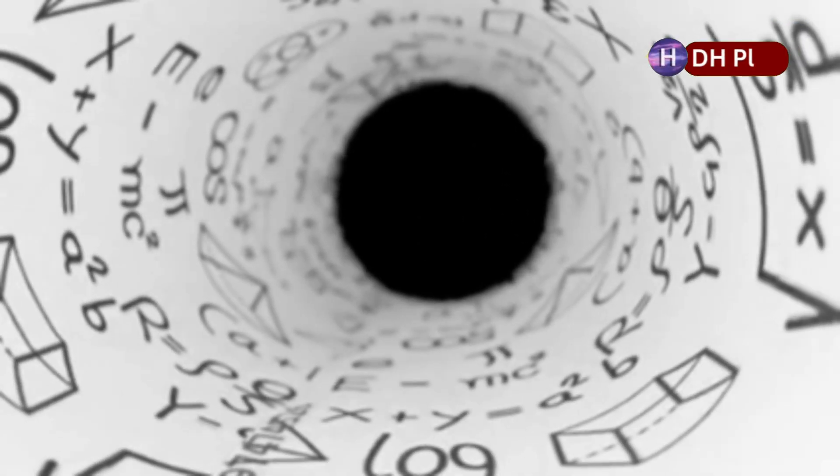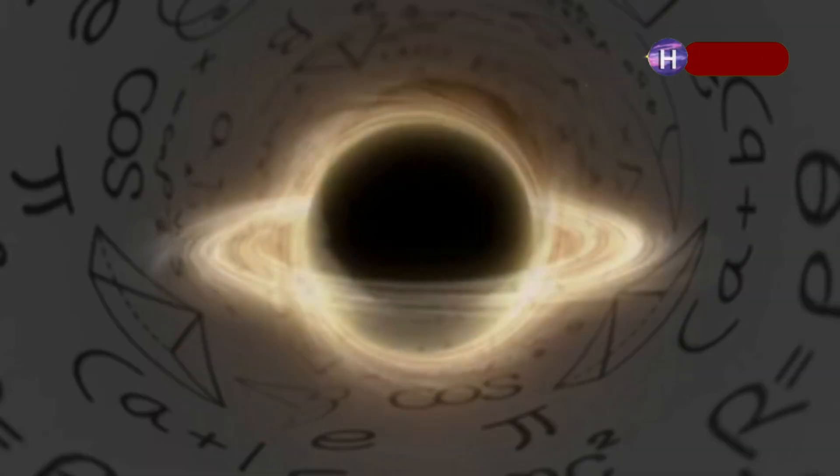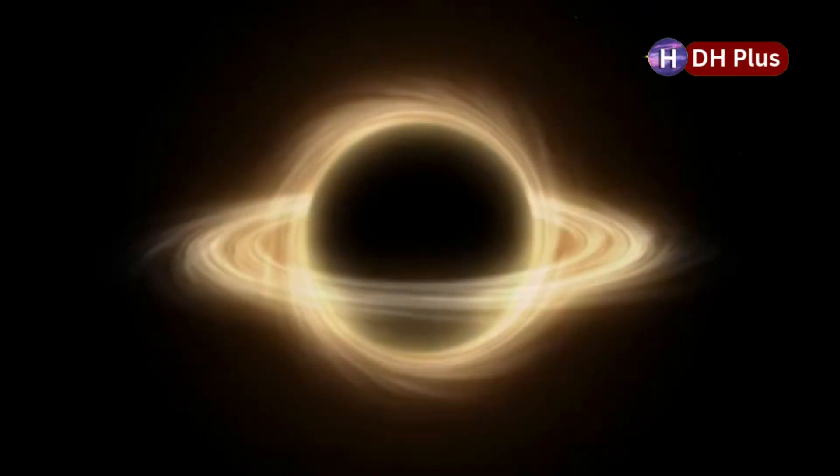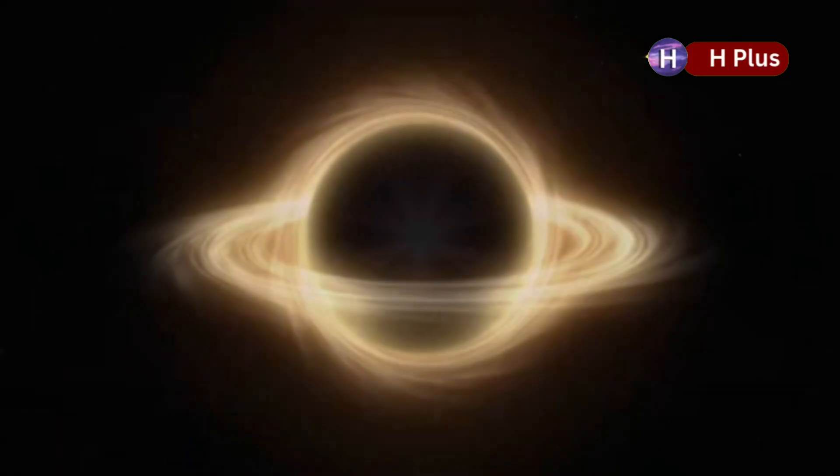What happens inside that horizon is still one of the great unsolved mysteries in physics. This is where black hole cosmology, also known as Schwarzschild cosmology, enters the picture. It proposes something radical: that what we see as our universe is actually the inside of a black hole in some larger parent universe.